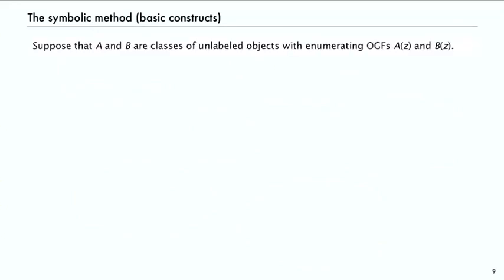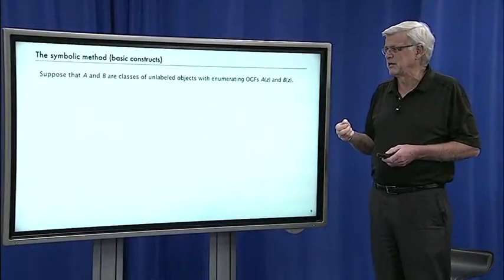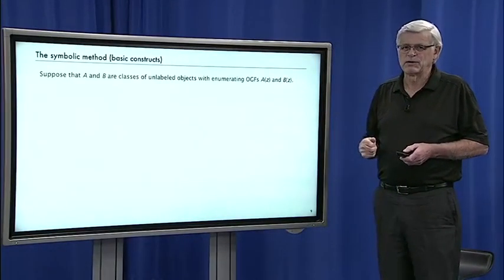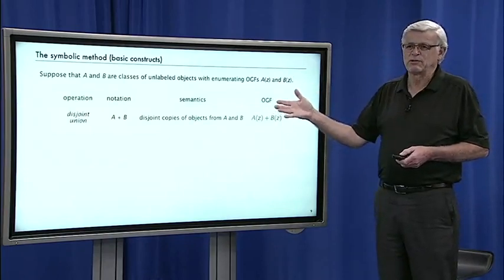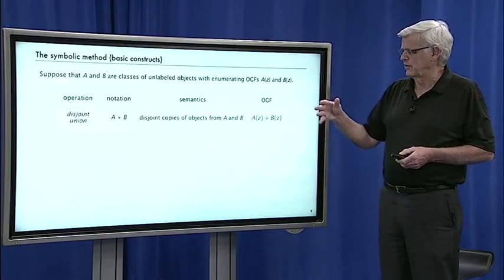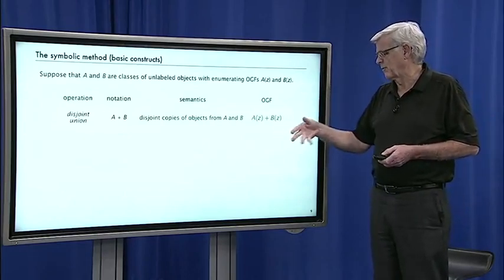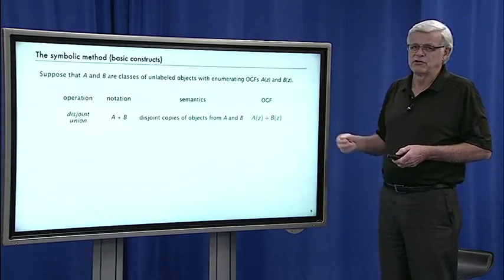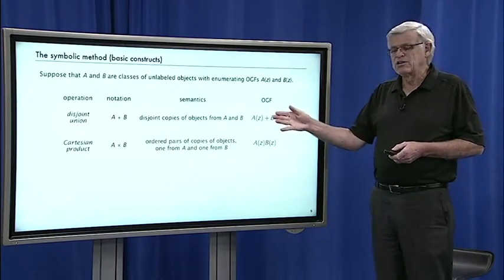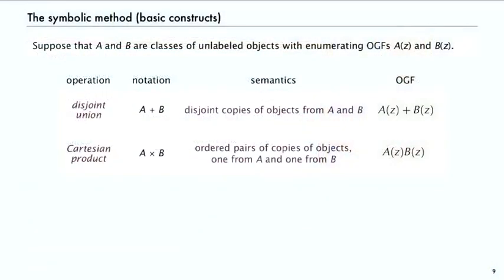To describe those combinatorial classes, we use basic operations or constructions. If we have two classes, A and B, of unlabeled objects with generating functions A(z) and B(z), then we can perform some natural operations on them. The disjoint union just sums the two generating functions. Then there's a Cartesian product. If we take a pair of copies, one from A, one from B, then we get a class whose ordinary generating function is the product of the two generating functions. The proofs of these are easy and we'll look at it in just a second.